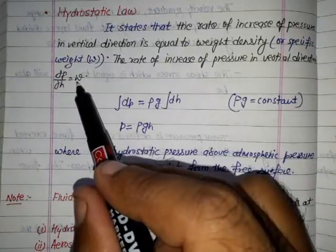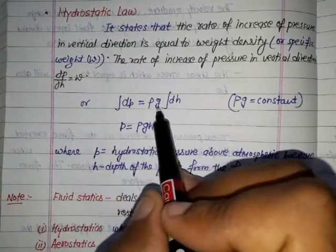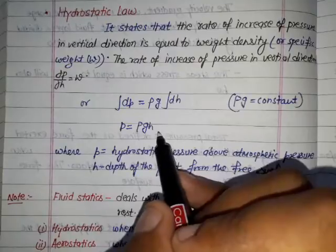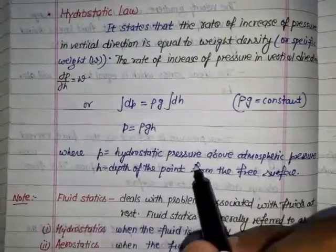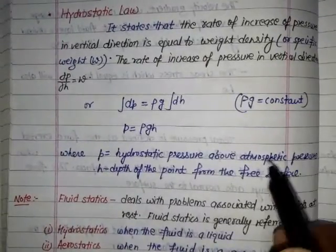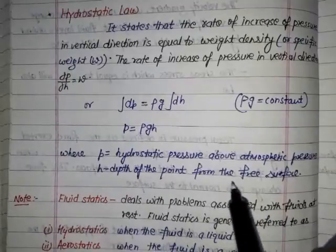We know w equals ρg, so ρg is constant. Therefore P = ρgH, where P is hydrostatic pressure above atmospheric pressure, and H is the depth of the point from the free surface.